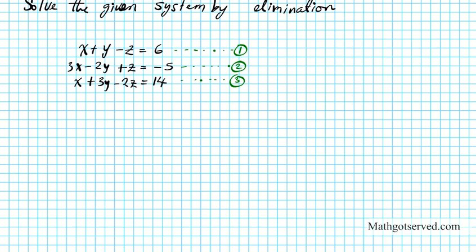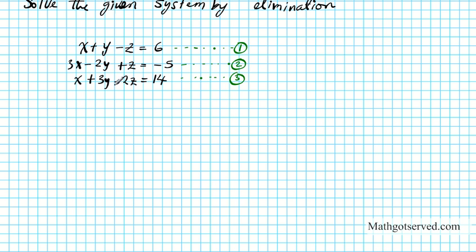The goal here is to eliminate one variable and then create a new system of equations with just two variables, and then solve them. I'll substitute back systematically to find what all three variables are. The goal is to identify the variable that is the easiest to eliminate. In most cases, variables with a coefficient of 1 are easier to eliminate because just by altering the sign, you can create opposites as opposed to changing the whole coefficient.